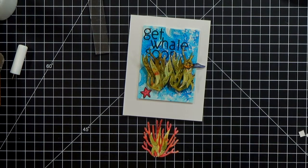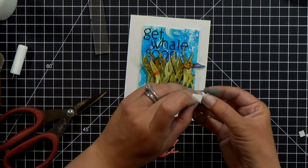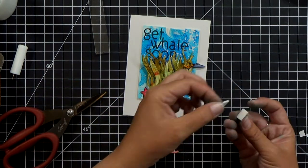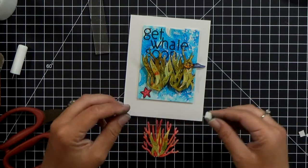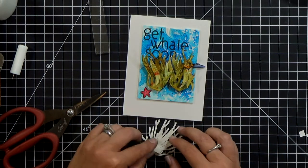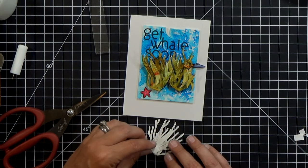So now I've got a triple layer of foam and I'm only going to put it at the very bottom of that piece of coral just so that the seaweed pieces can move freely underneath it.